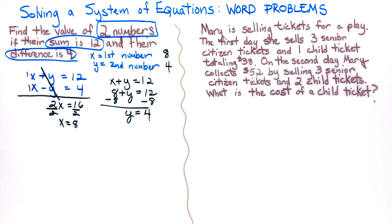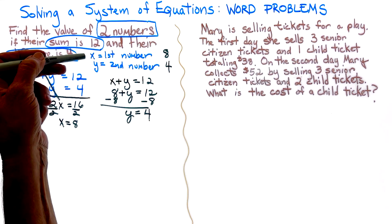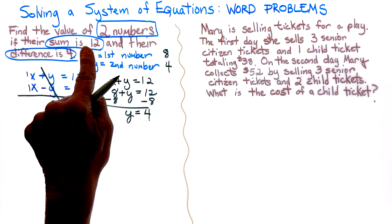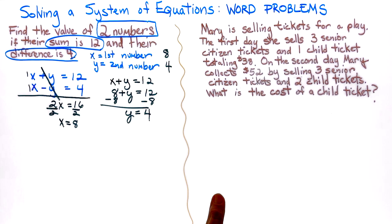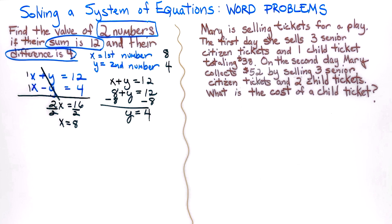Our two numbers that we were talking about, the value of those numbers for the first number is 8, and the second number is 4. So do they add up to 12? Yes. If you subtract 8 minus 4, is it 4? And the answer is yes. So we know our numbers are correct.